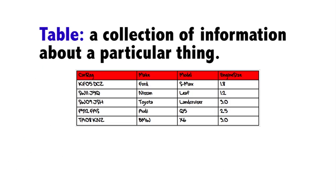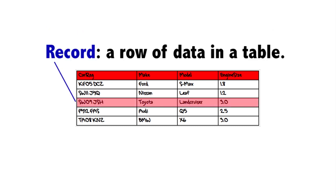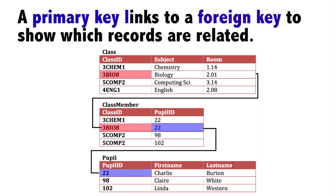Some things to remember: a table in a relational database is a collection of information, and each record is about one thing in the collection. Linked tables are two or more tables in a database that share a key field. The value of the key field is used to link the two tables together to provide more information.